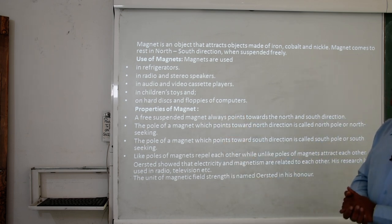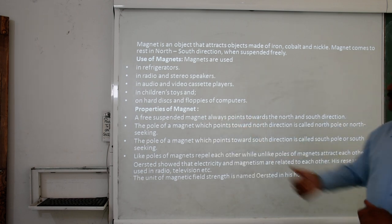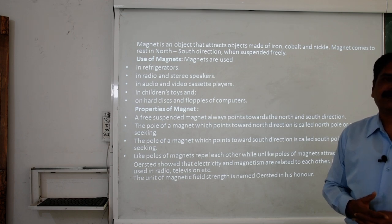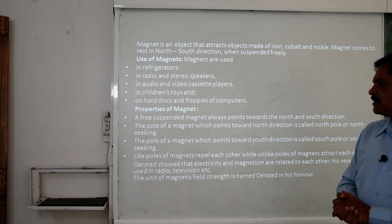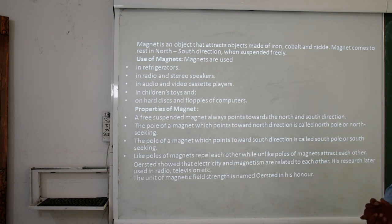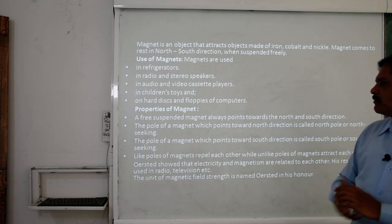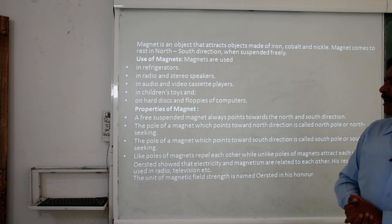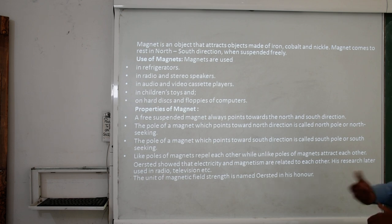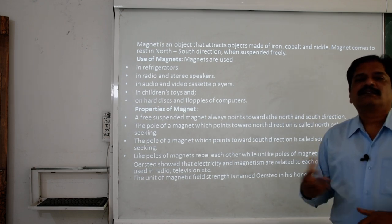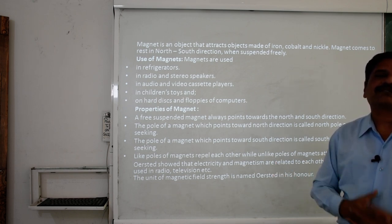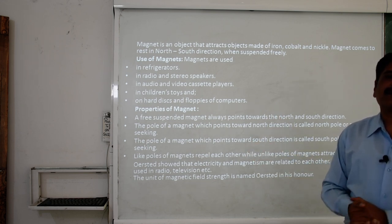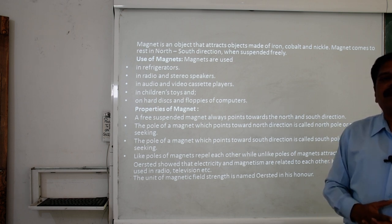The properties of the magnet: a freely suspended magnet always points towards the north and south direction. The pole of a magnet which points towards the north direction is called the north pole or north-seeking pole, while the pole pointing towards the south is called the south pole or south-seeking pole. Like poles of magnets repel each other, while unlike poles attract each other — just like in electricity where similar charges repel and opposite charges attract.